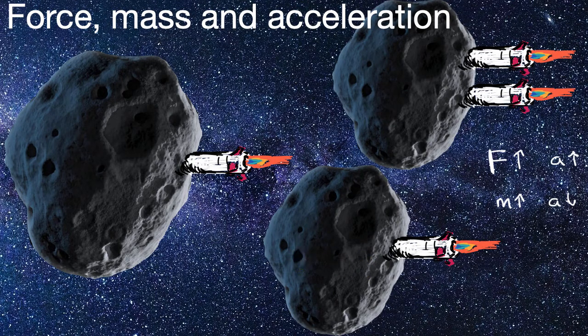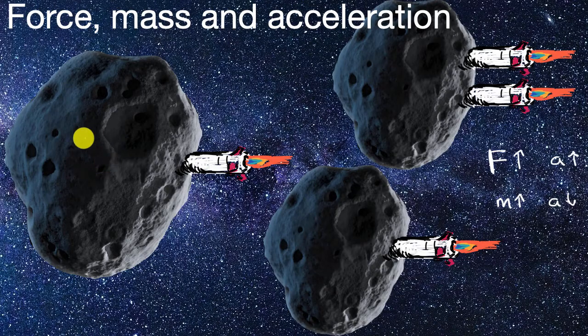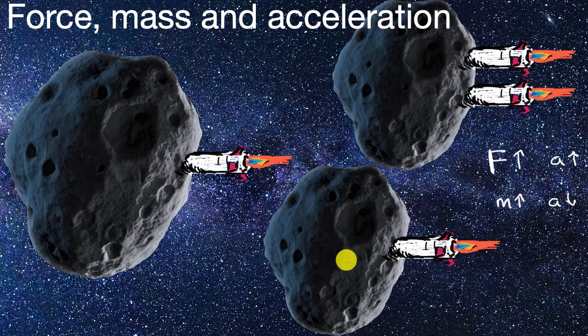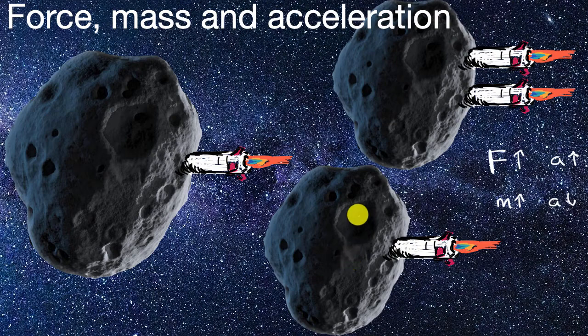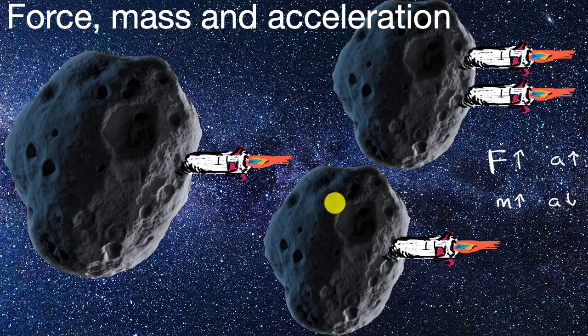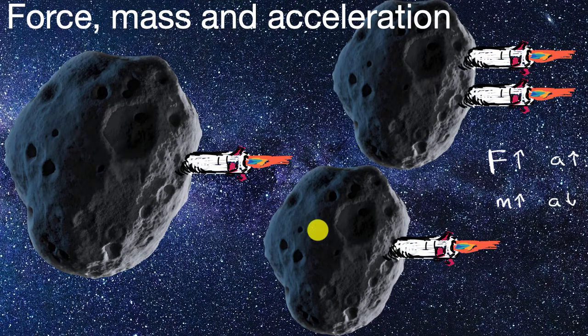Well, as you might imagine, the acceleration on the larger asteroid is going to be half the acceleration on this asteroid. Or another way to think about it, this asteroid is going to have twice the acceleration as this first asteroid. And that's because it has half the mass.